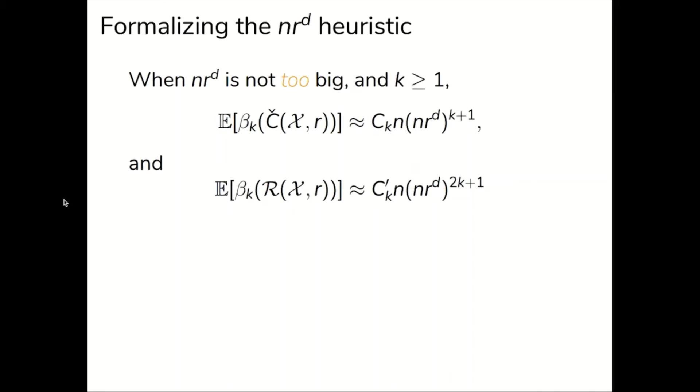Similarly, the expected k-th Betti number of the Vietoris-Rips complex is some constant times n times nr to the d to the 2k plus 1.